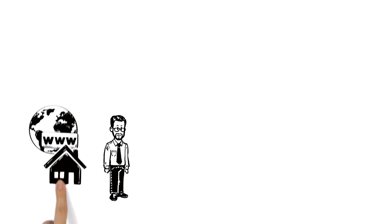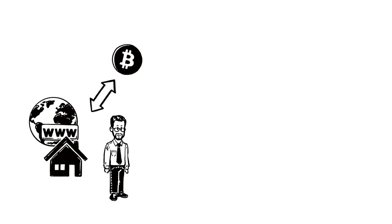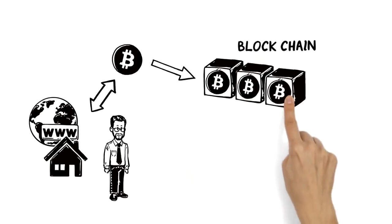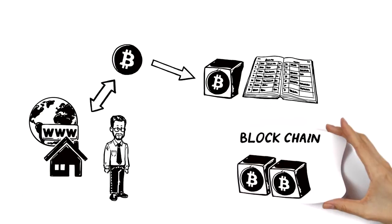Users each have their own address, from which they can send and receive Bitcoins. A collection or block of these transactions is then added to the blockchain, Bitcoin's equivalent of a bank's ledger.